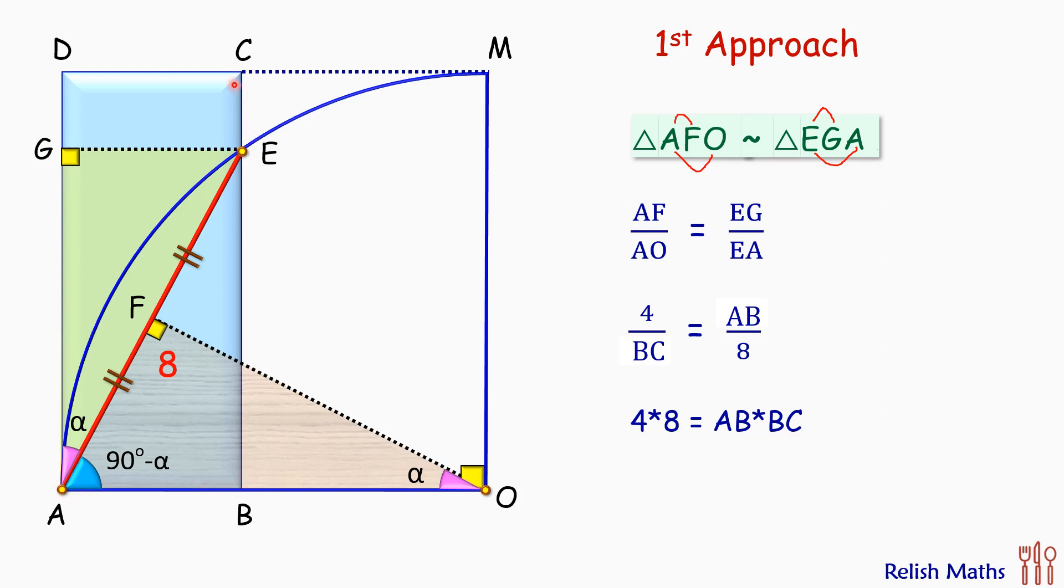But AB times BC is the length times breadth of the rectangle, or area of rectangle. Thus area of rectangle is 32 centimeter square, and that's our answer.